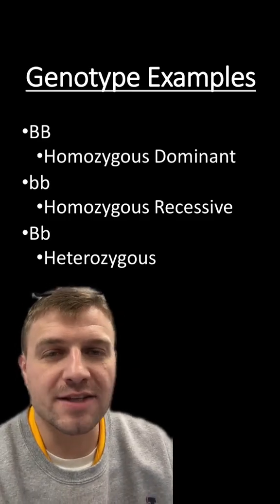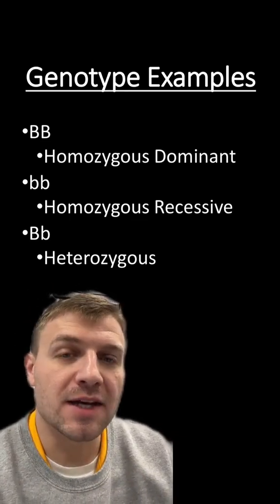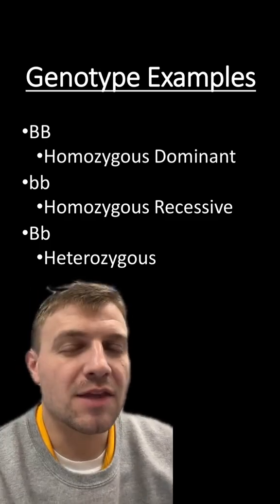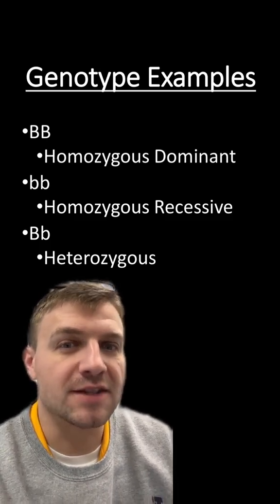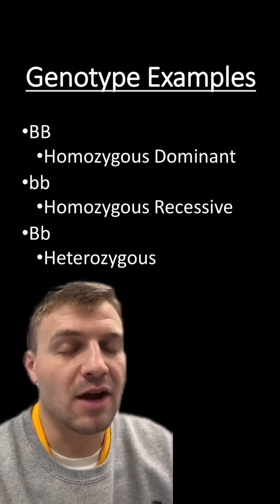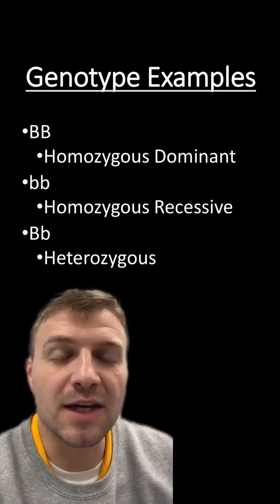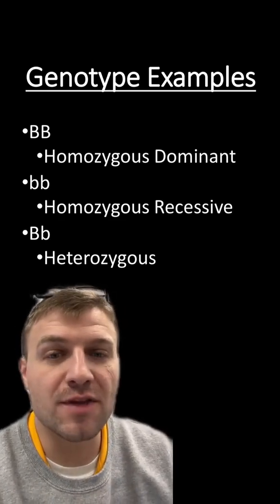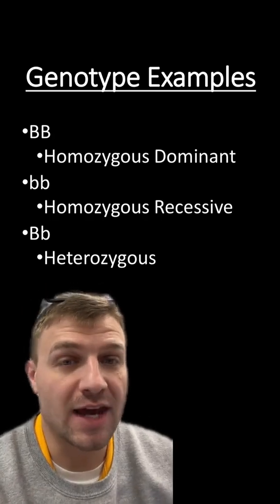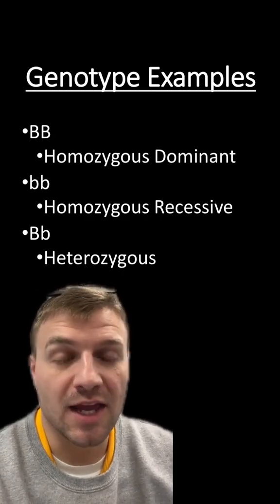Let's take a look at how we identify the three different types of genotypes. Capital B, capital B is homozygous dominant because the alleles are the same and they represent the dominant allele. Lowercase b, lowercase b is a homozygous recessive genotype because the alleles are the same and they are lowercase. Big B, little b is a heterozygous genotype because the alleles are different. In a heterozygous genotype, the capital letter will always come first, and we don't specify dominant or recessive because there is one of each allele.